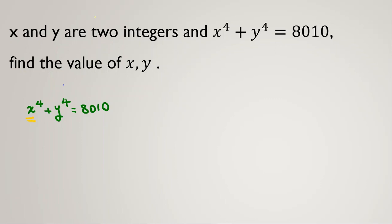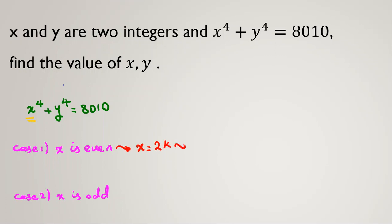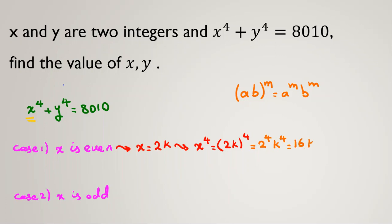Case one: x is even. We want to see what is the property of x to the 4. Because x is even, x equals 2k, so x to the 4 equals (2k) to the 4. By the power rule (ab)^m = a^m · b^m, this is 2 to the 4 times k to the 4, which is 16 times k to the 4. We call k to the 4 equal to q, so x to the 4 equals 16q.